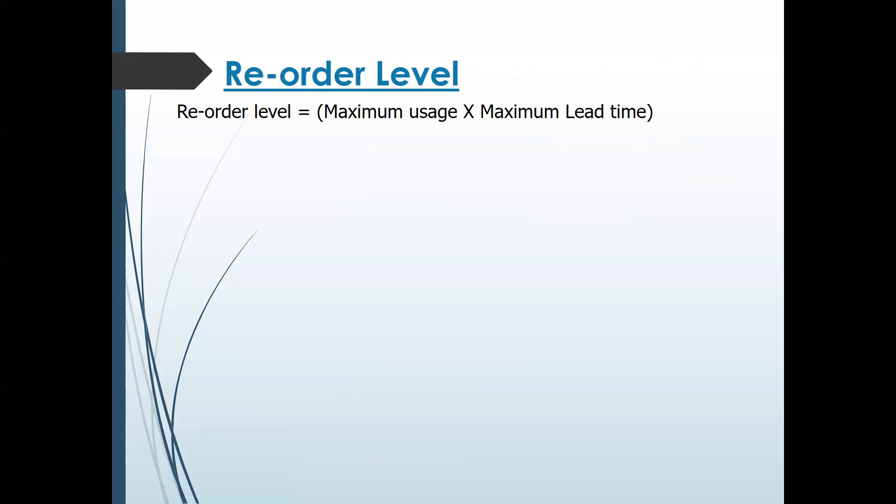Next is the reorder level. The formula is: Reorder Level = Maximum Usage × Maximum Lead Time. Maximum usage is 140 units, maximum lead time is 5 weeks, giving 700 units. Reorder level means when you have 700 units in stock, you need to re-order. Otherwise, you risk overstock or understocking.